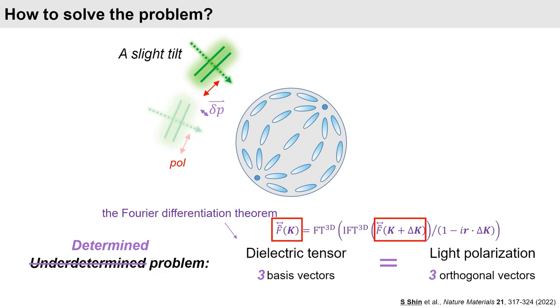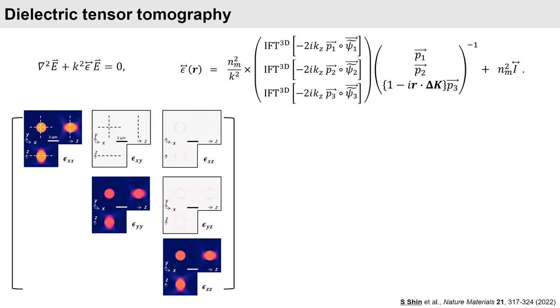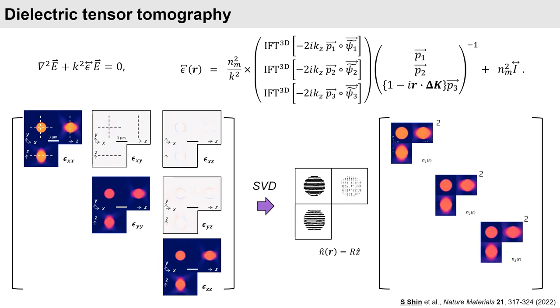By inversely solving the vectorial wave equation, I derived the analytical solution. It enables to reconstruct the 3D dielectric tensor distribution. And by diagonalizing the dielectric tensor tomograms, 3D distribution of the principal refractive indices and the directors can be obtained.